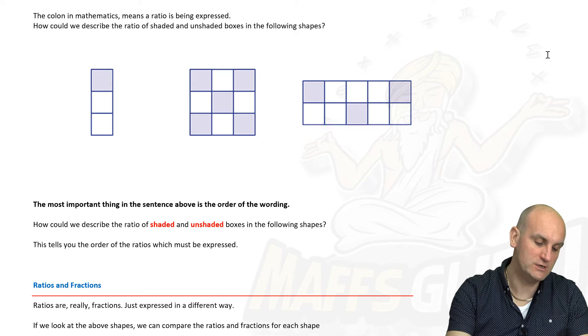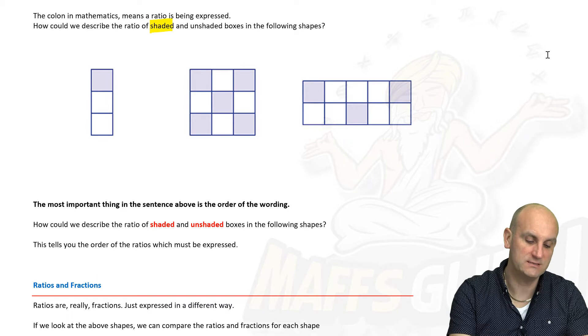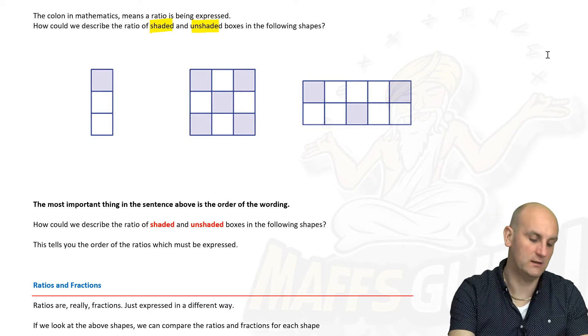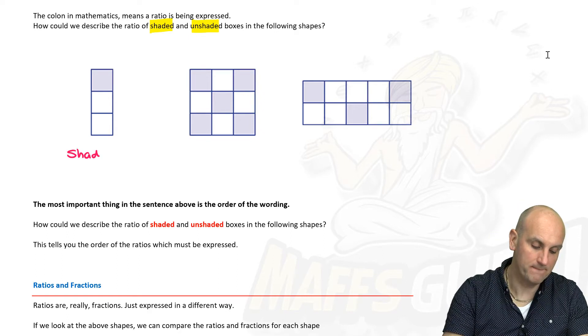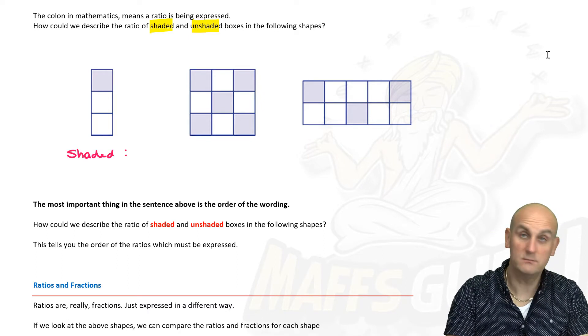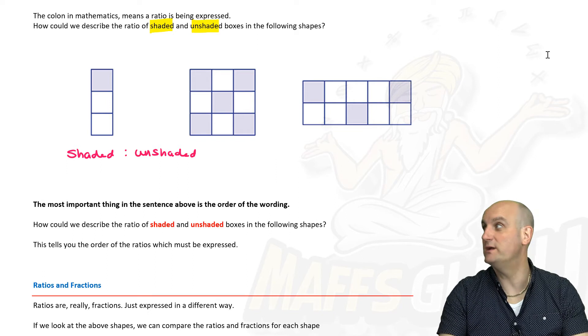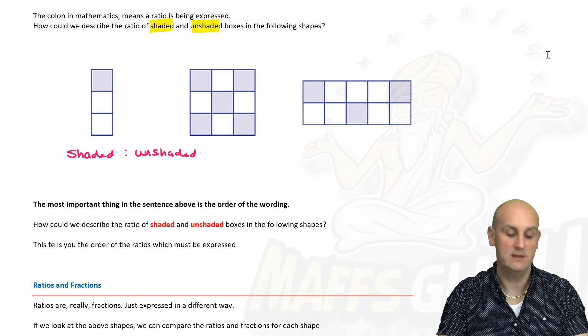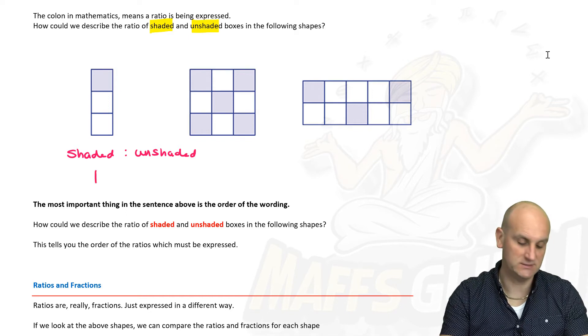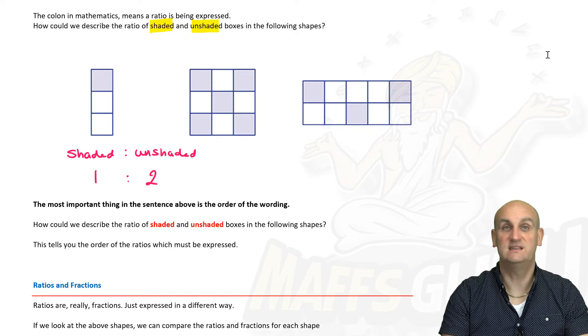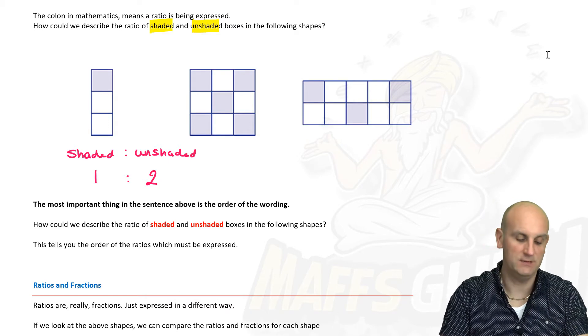Well let's look at this question here: how could we describe the ratio of shaded to unshaded boxes? First thing to notice with this question is the word shaded comes first and unshaded comes second. Basically, as I said at the start, that's the key to this lesson. You have to write shaded, then a colon to say it's a ratio, and then unshaded. Believe it or not, for this particular question there's nothing more to do now than count how many shaded boxes you see: one. How many unshaded boxes do you see: two. Job done. That's it.